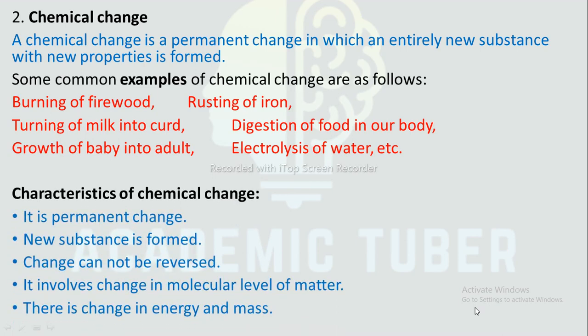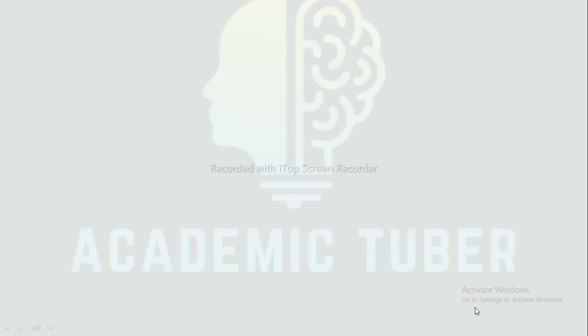Characteristics of chemical change: It is a permanent change. A new substance is formed. Change cannot be reversed. It involves change at the molecular level of matter. There is change in energy and mass.